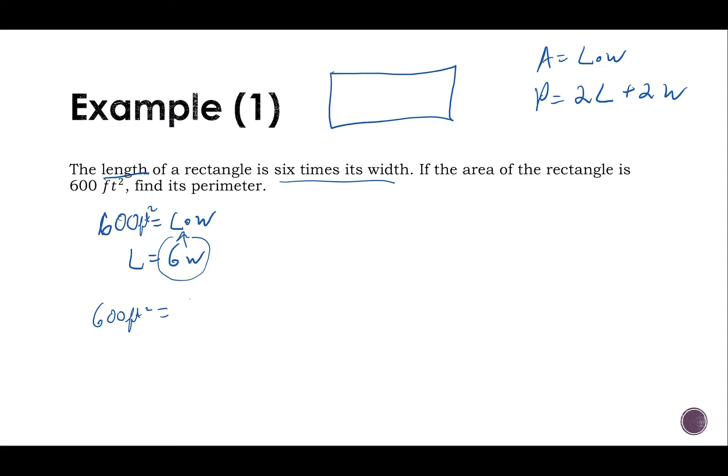Is six W times W. That gives me 600 feet squared is six W squared. We divide both sides by six. 100 feet squared is W squared. We take the square root. So 10 feet is my W.